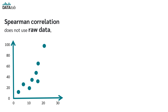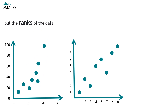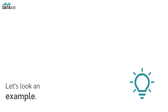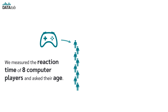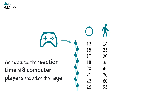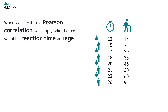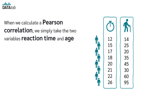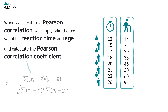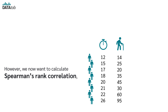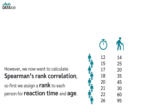Spearman correlation does not use raw data, but the ranks of the data. For example, we measure the reaction time of eight computer players and ask their age. When we calculate a Pearson correlation, we simply take the two variables — reaction time and age — and calculate the Pearson correlation coefficient. However, when we calculate Spearman's rank correlation, we first assign a rank to each person for reaction time and age.